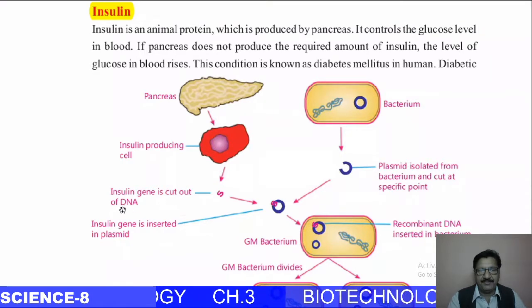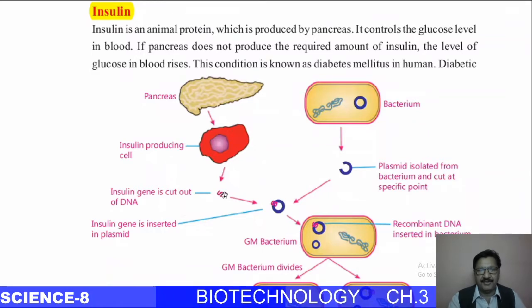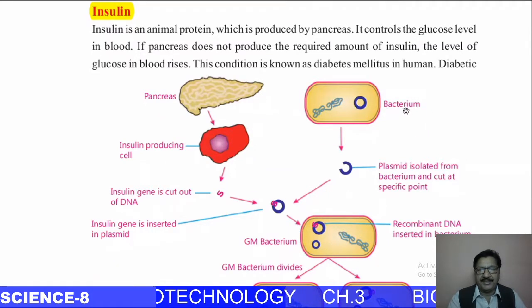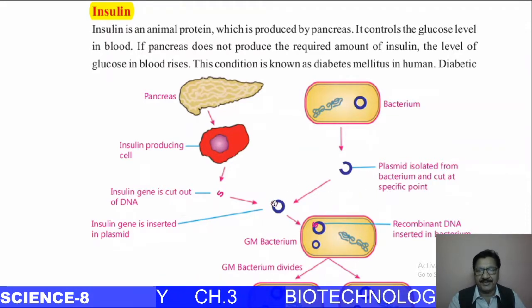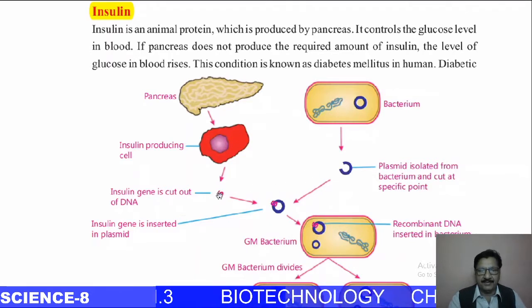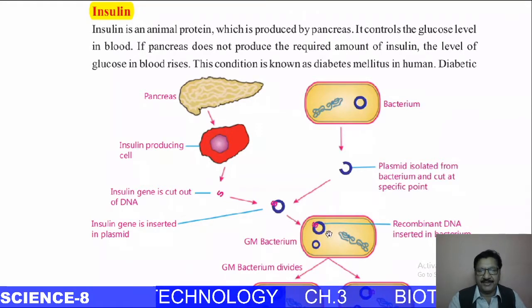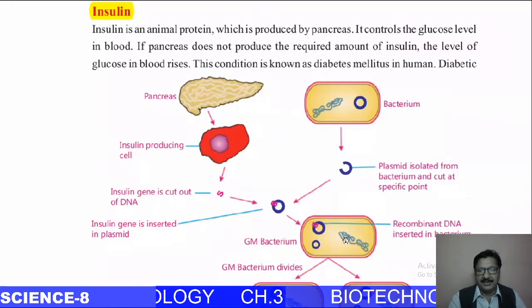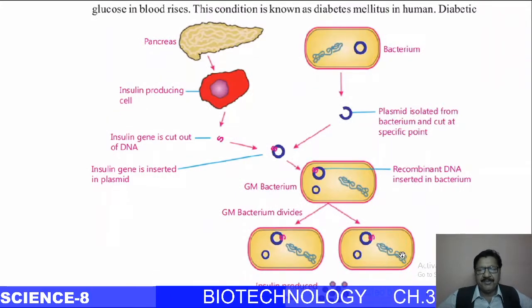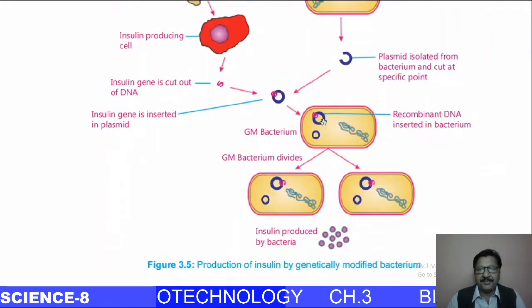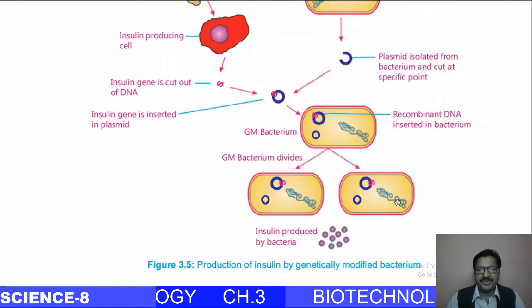The gene removed from the pancreas cell is inserted into the bacterium's gene, called a plasmid. The plasmid is the DNA of the bacterium. Both the gene from the pancreas and the DNA of the bacterium are mixed and inserted into another bacterium. After 20 minutes, they reproduce — one bacterium changes into two bacteria.